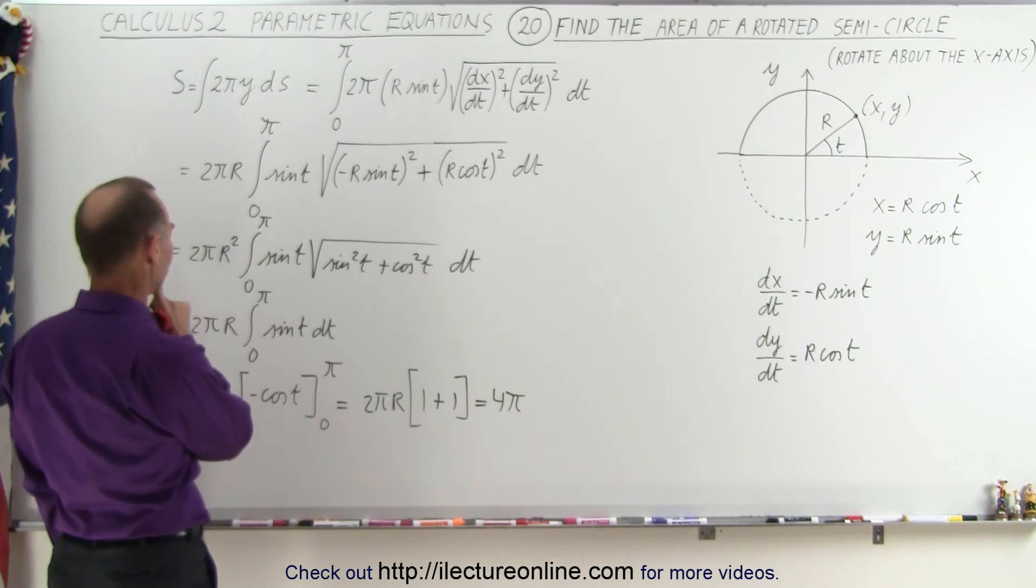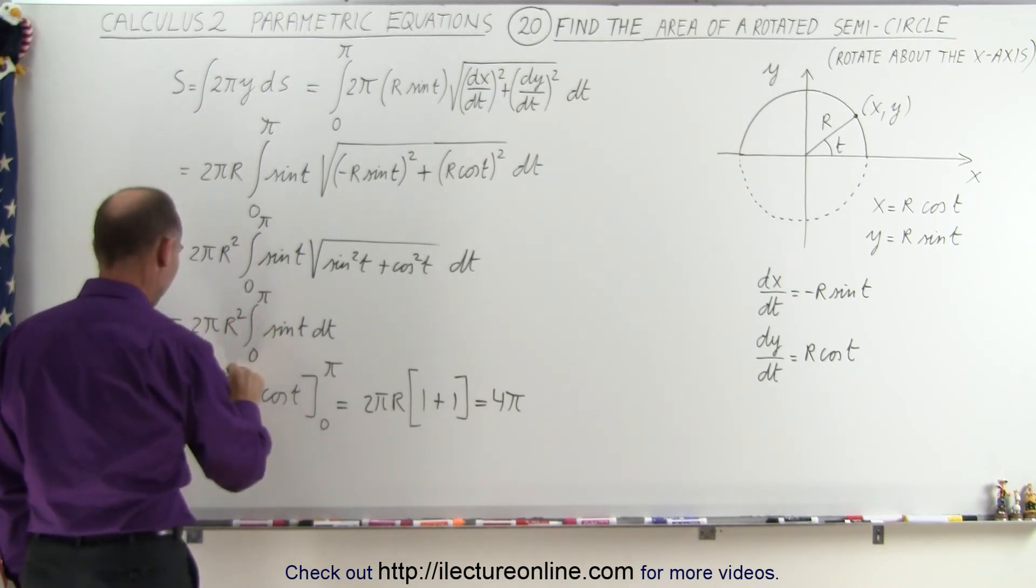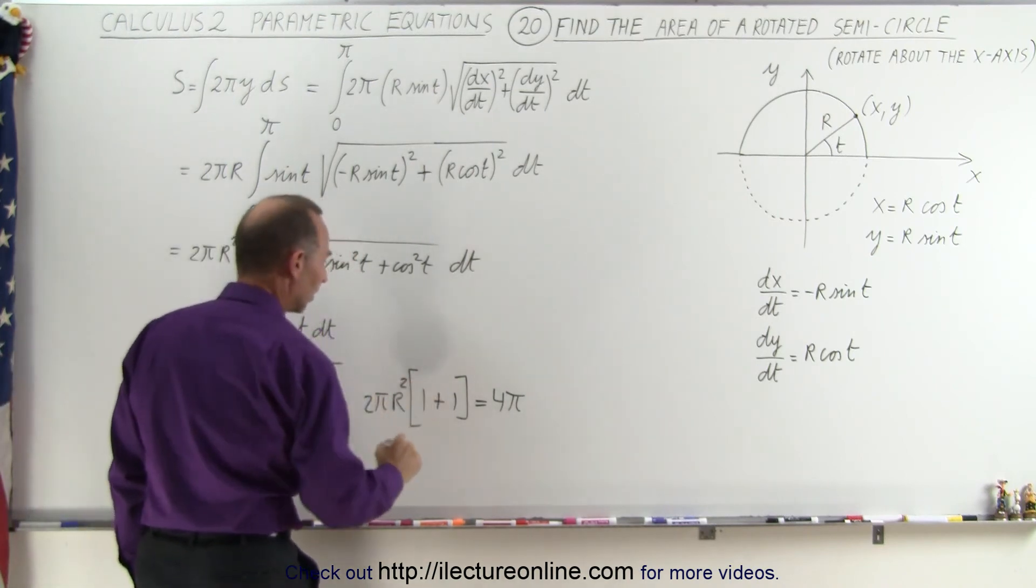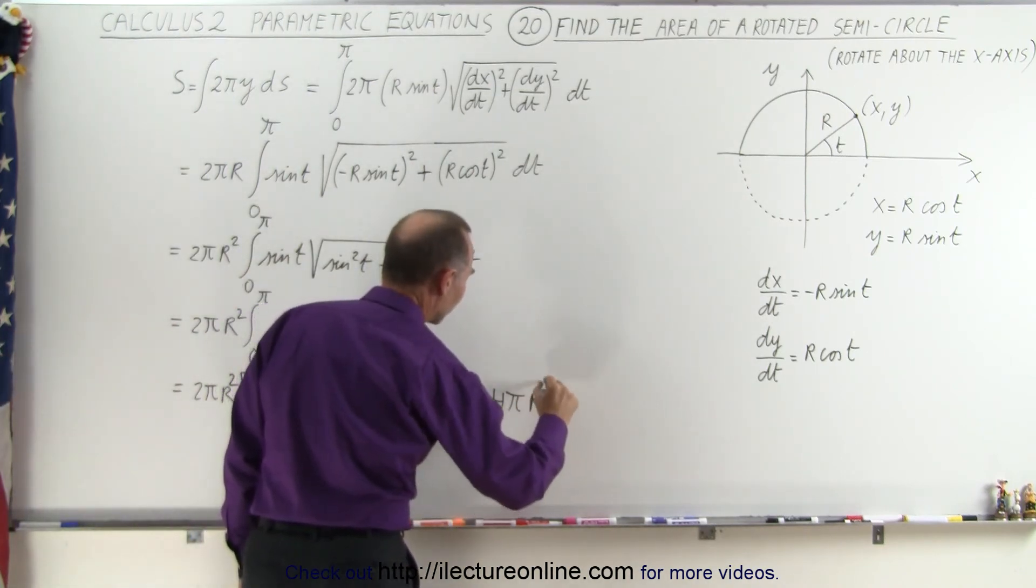And let's see here. I think I'm missing something. Because I have an r² there, I forgot the square, so it's 4πr².